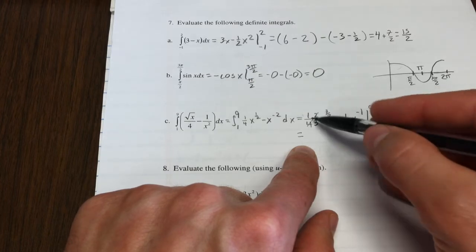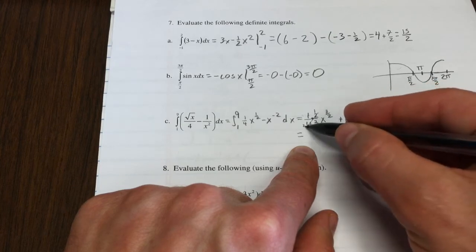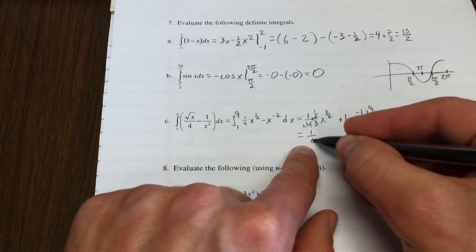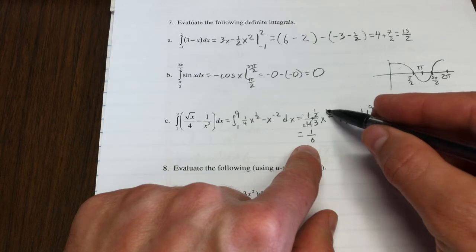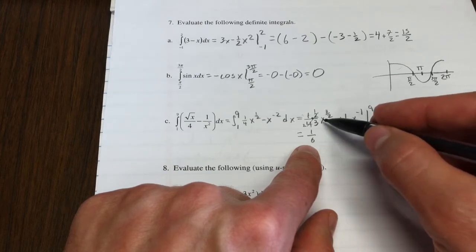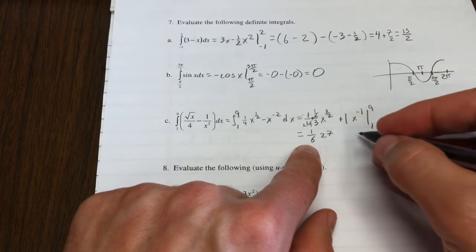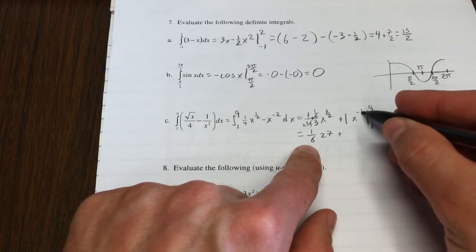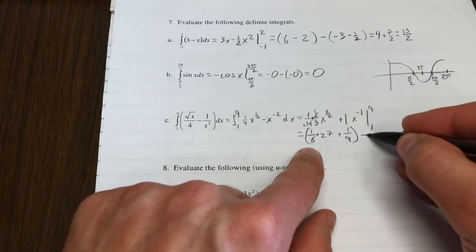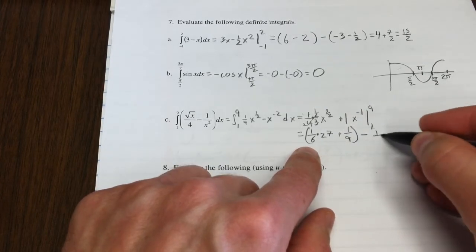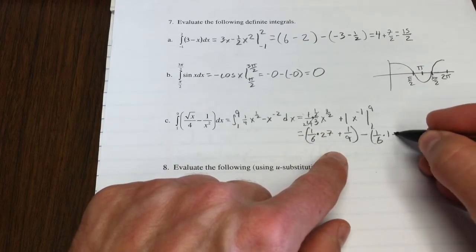I guess those cancel. So we really just have a 1 in the numerator and a 6 in the denominator. So one-sixth plugging in 9 into this raised to the three-halves. Well, 9 to the one-half, that's 3. And then 3 cubed is 27. So that would be 27 plus, this is 1 over 9. So we've got to do that. Minus the evaluation at 1. That should be a little easier. One-sixth times 1 plus 1.